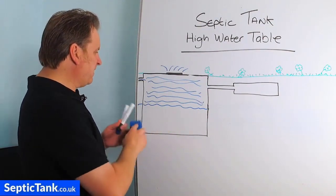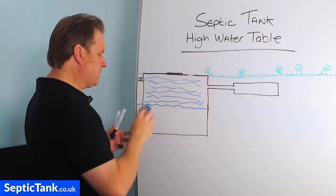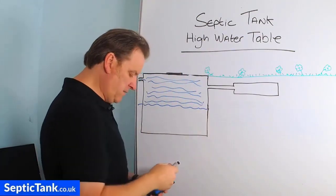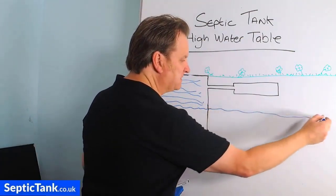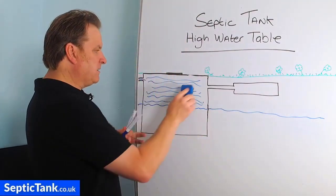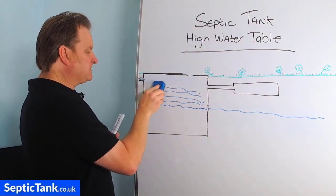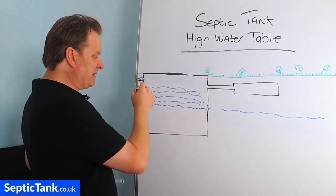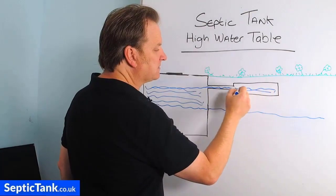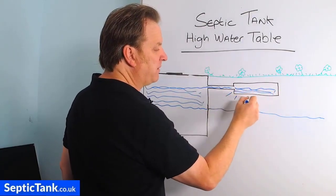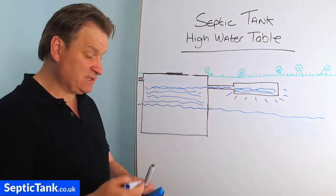From then on, instead of overflowing — because this is the height of your water table — when the septic tank fills up with liquid it will get to the new outlet point, go into the raised soakaway, and the soakaway will be able to drain away naturally into the soil again.